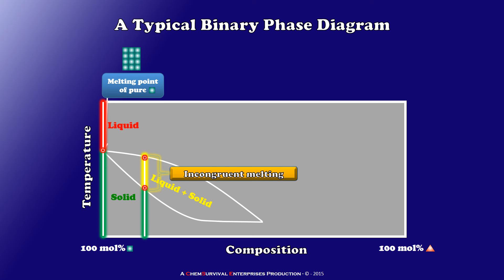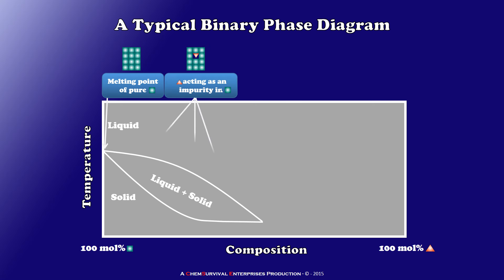And of course, if I continue heating once melting is complete, I simply heat the liquid again. So at this point, we can think of this part of the diagram as my red compound acting as an impurity in my green compound.